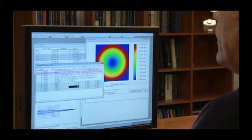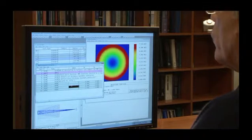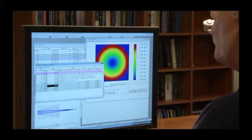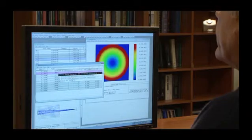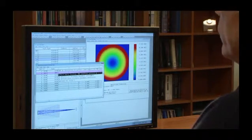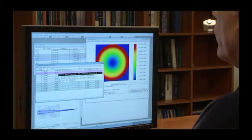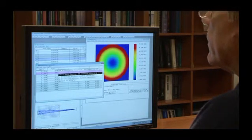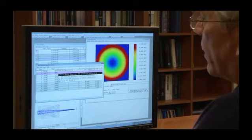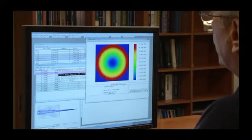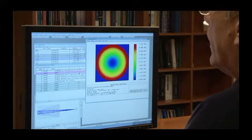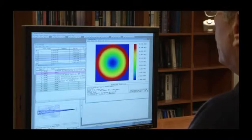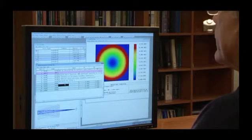And here in the merit function, I'm tracing just four rays using the RMS wave front relative to the centroid default merit function. And you can see I'm getting exactly the same number. We actually show it to higher precision in the merit function than we do here on the grid, but it's the same number. So this is 0.0022 waves and so is this.